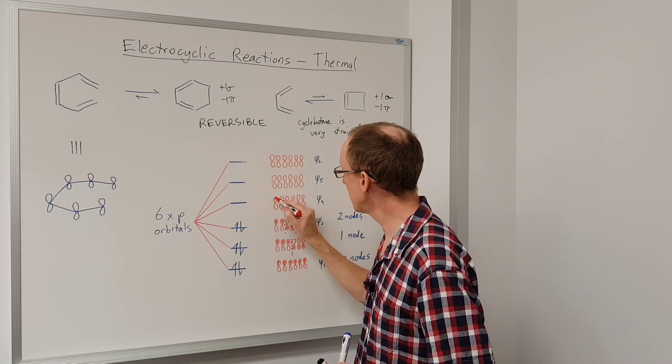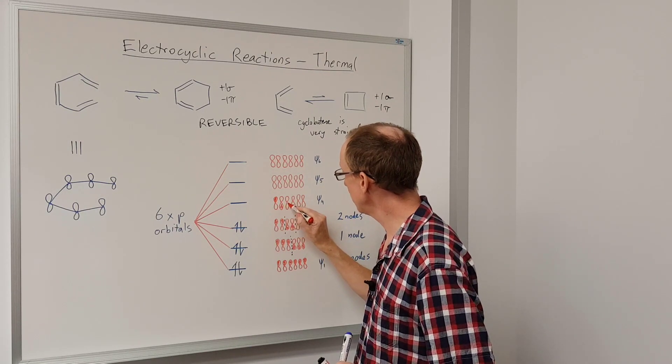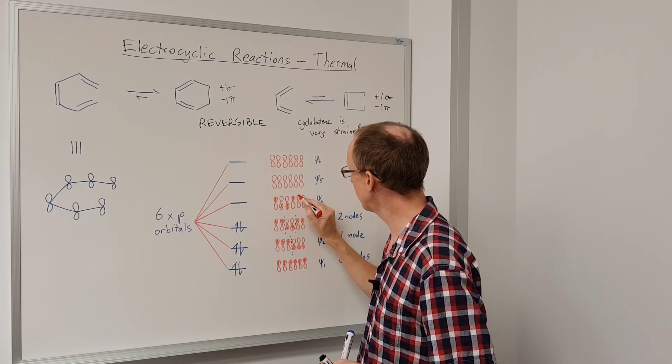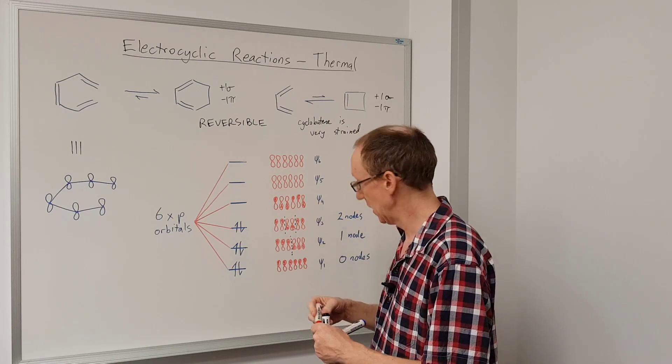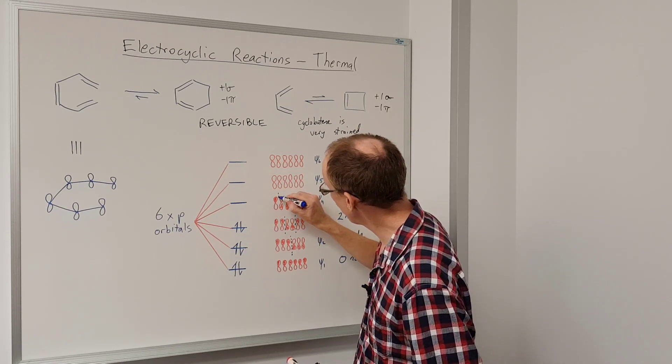The next one up, psi four, we're going to have this one like that, these two in phase, these two in phase, and then this one like that. And this is going to have three nodes.